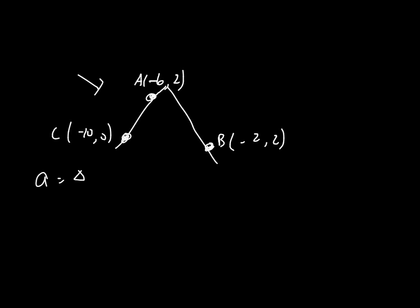The slope is equal to the change in y over the change in x. So that's y2 minus y1 over x2 minus x1. That gives me 2 minus 0 is 2, divided by negative 6 minus negative 10 — that's negative 6 plus 10, which is 4. And that gives me a slope of 1 half.